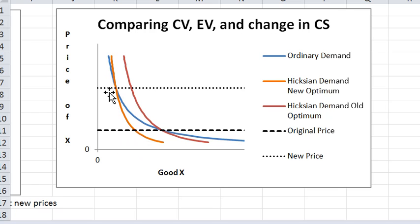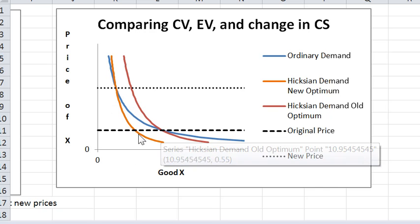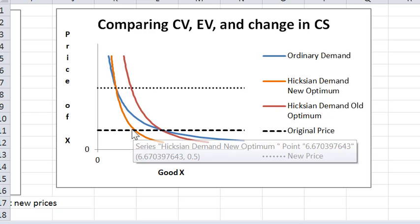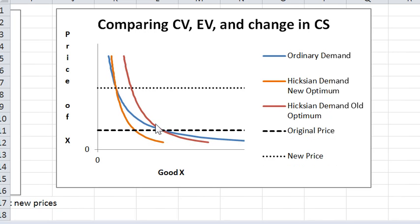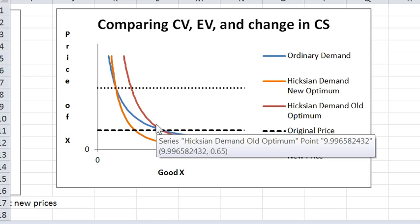The area between here and here is the change in consumer surplus as a consequence of the price change. So that change in consumer surplus has a lower bound, in this case because it's normal, of the equivalent variation and an upper bound of the compensating variation. So there you have it.